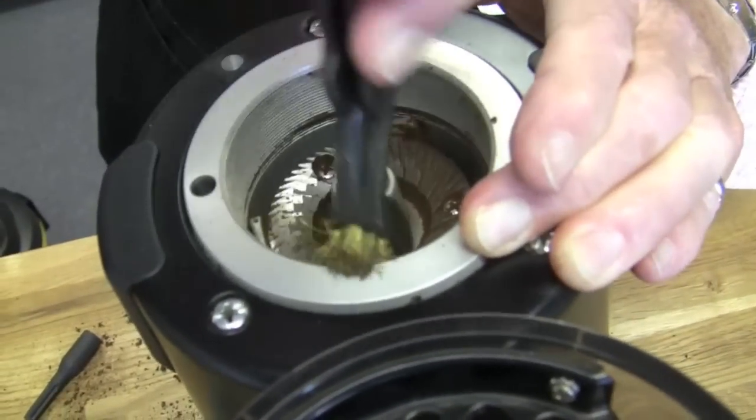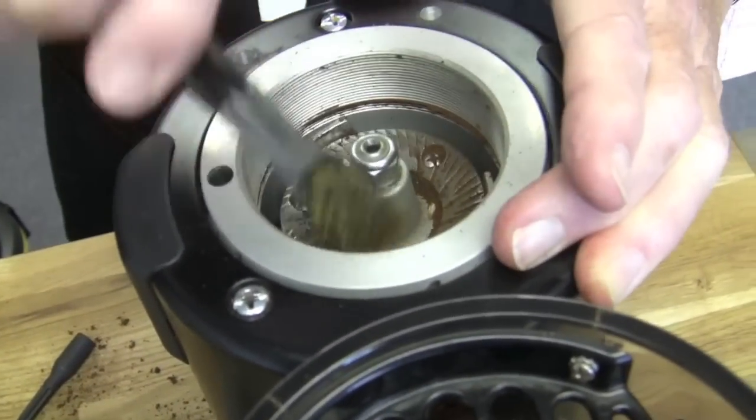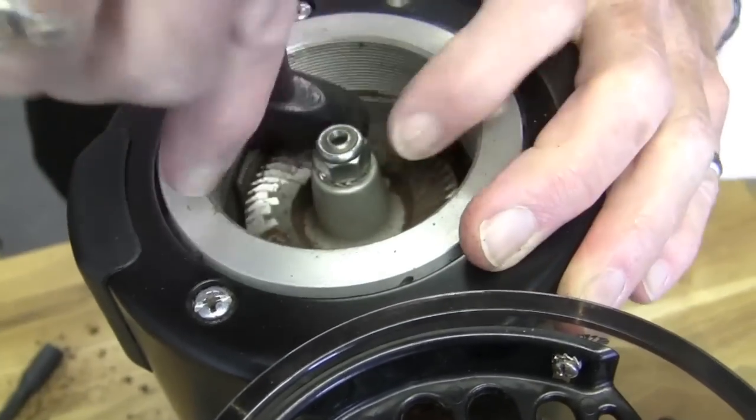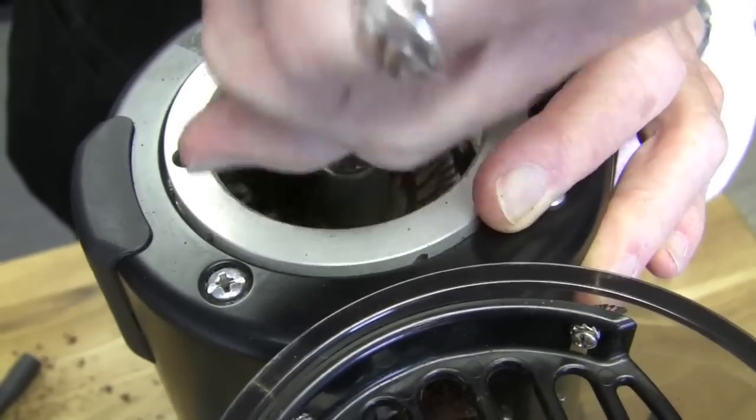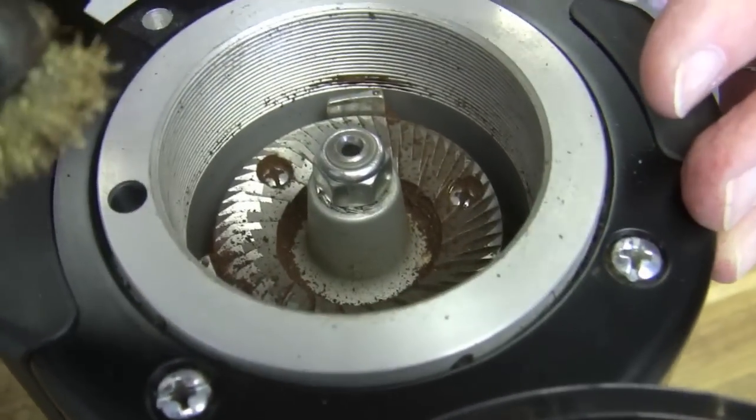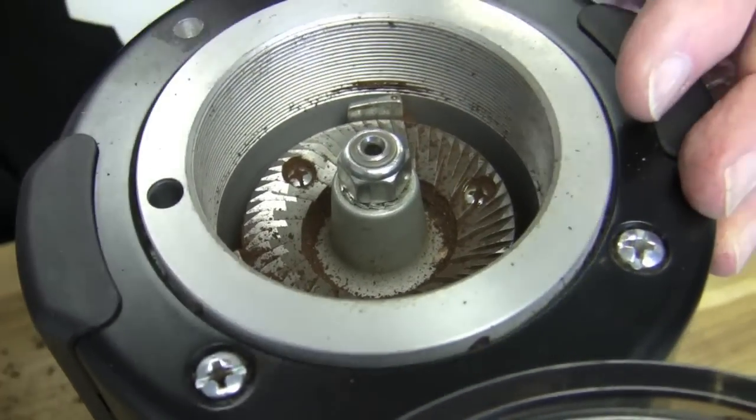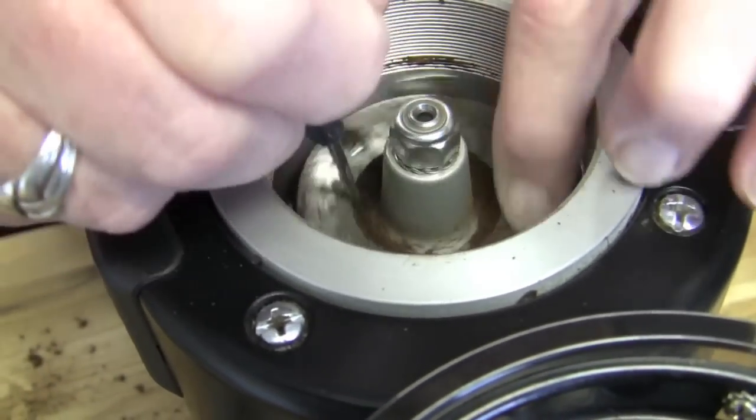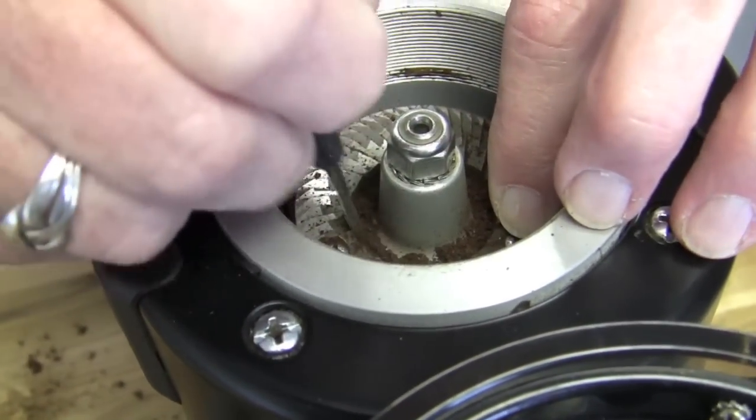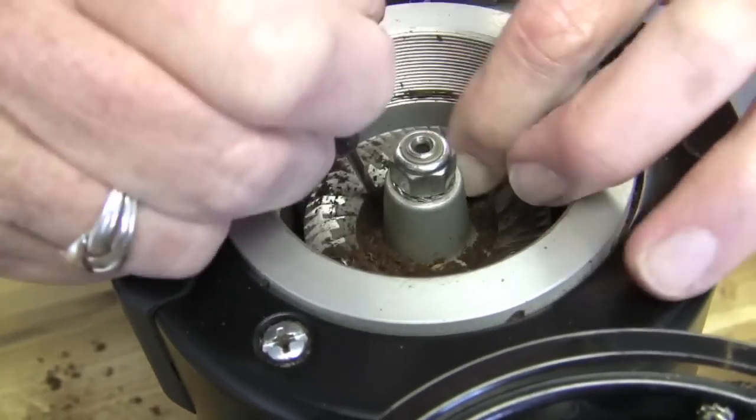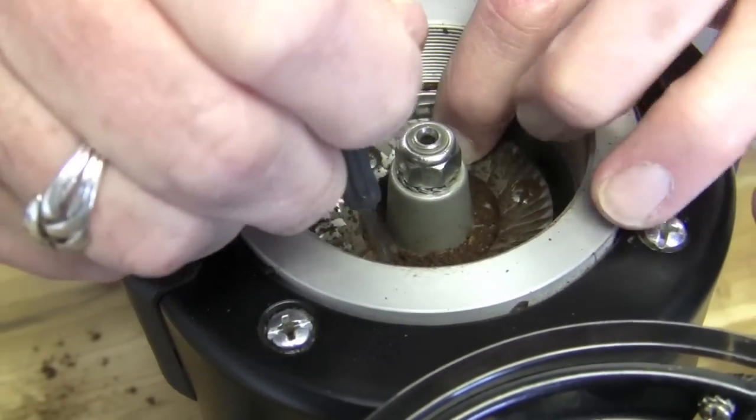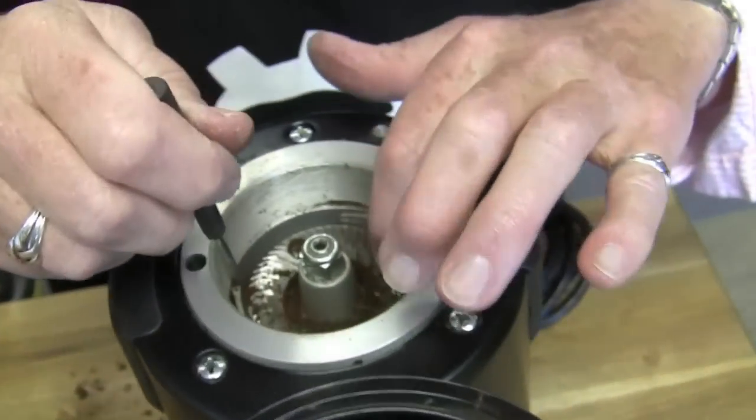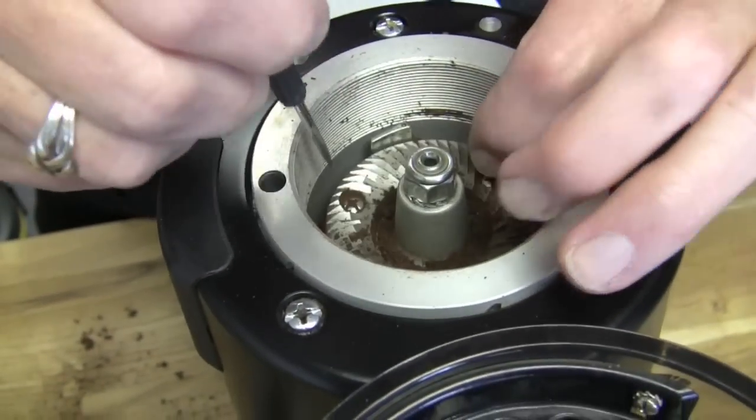So in here, you want to get it out of the burrs and the threads as well. How do I get at the grounds down in there, sort of in the middle? Take a pick, something that's just pointed, loosen it. Then take your shop vac again or your compressed air and get it in there. And boy, if you've been using an oily bean, this is going to be really gummy and black.